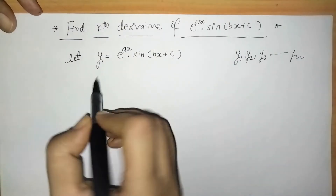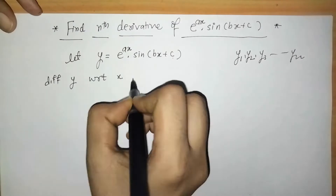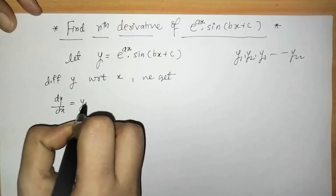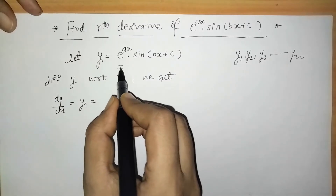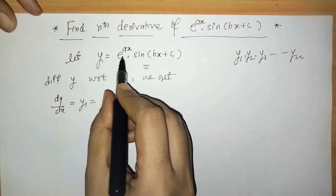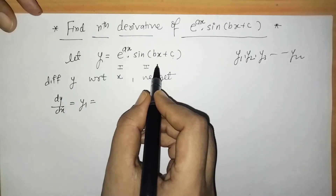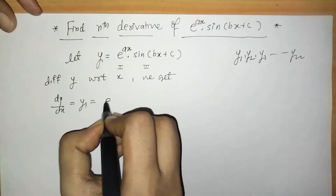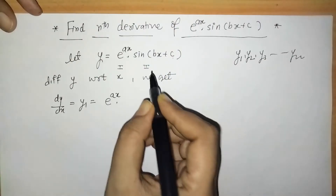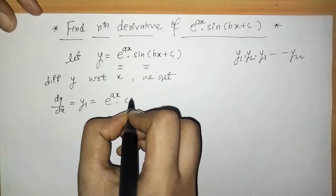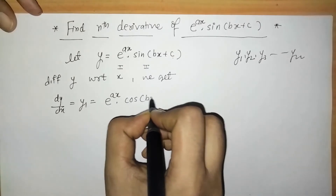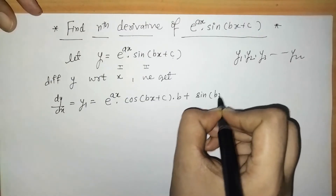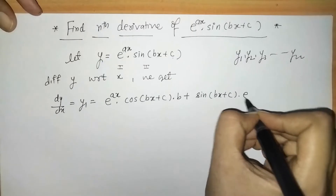So let us differentiate y with respect to x. Differentiating y we get the first derivative y1. Here we have two different functions: first is an exponential function and second is a trigonometric function, so we have to apply the product rule of differentiation. We have the first function into the derivative of the second — the derivative of sin is cos, giving cos(bx+c) into b.